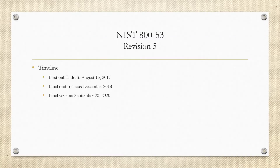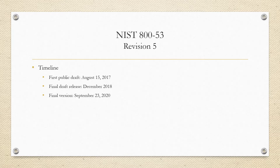I want to start off with a timeline. The first public draft was published August 15th of 2017. Then the final draft release was set for publication in December of 2018, and the final publication date was set for March of 2019. But as of September of 2019, Revision 5 did get delayed due to potential disagreements of the Office of Information and Regulatory Affairs and other U.S. agencies, so there was just some more tweaking that had to be done. It finally got released on September 23rd of 2020.